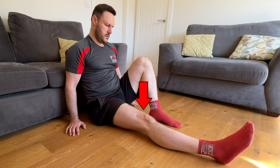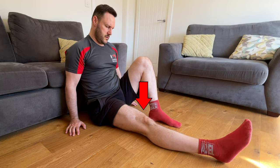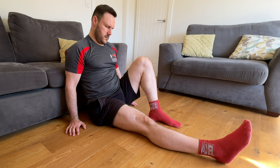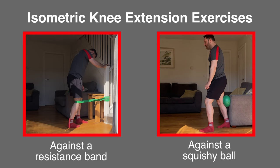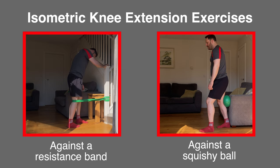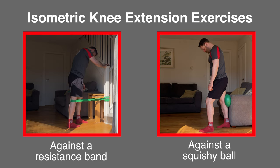Taking this further, you can perform quad sets — contracting the front thigh muscles to straighten the knee and holding the contraction for 10 seconds a few times a day. You can then add resistance by using a band or squishy ball against a wall, pressing the back of the knee into it to straighten the joint against the resistance for 10-second holds a few times a day.